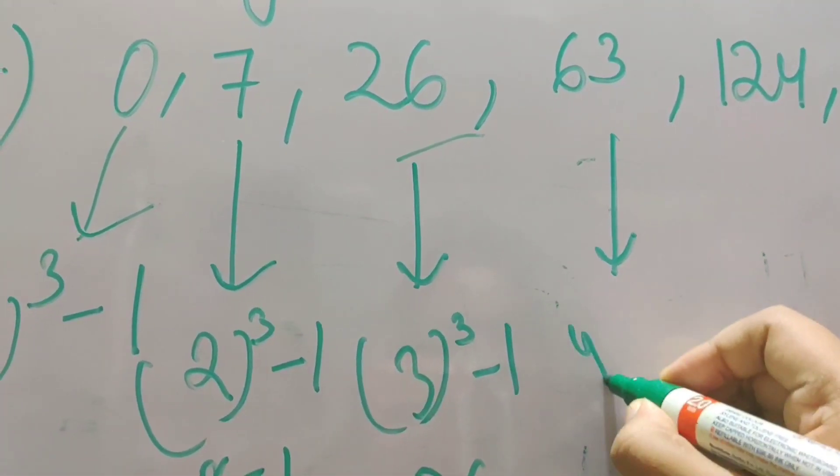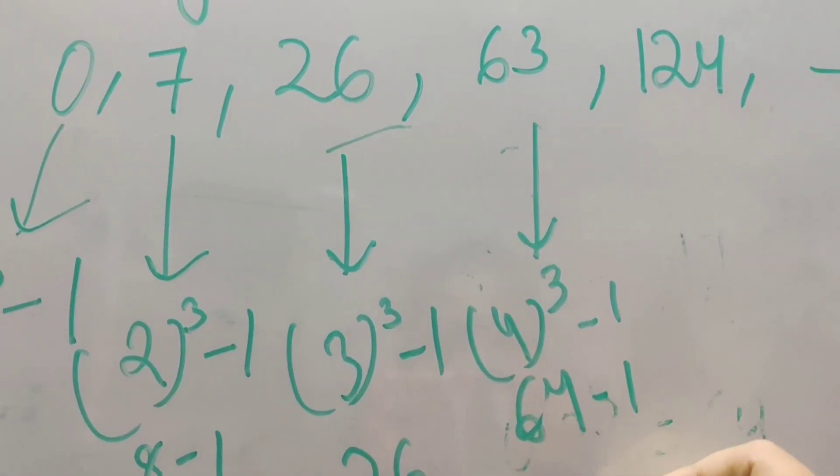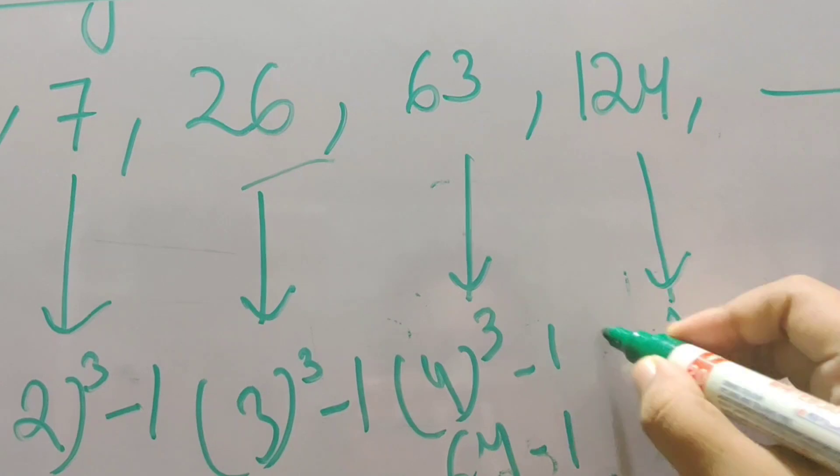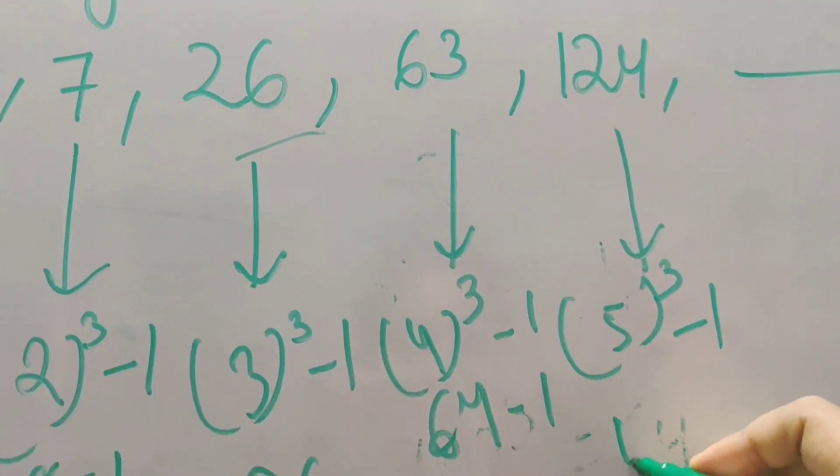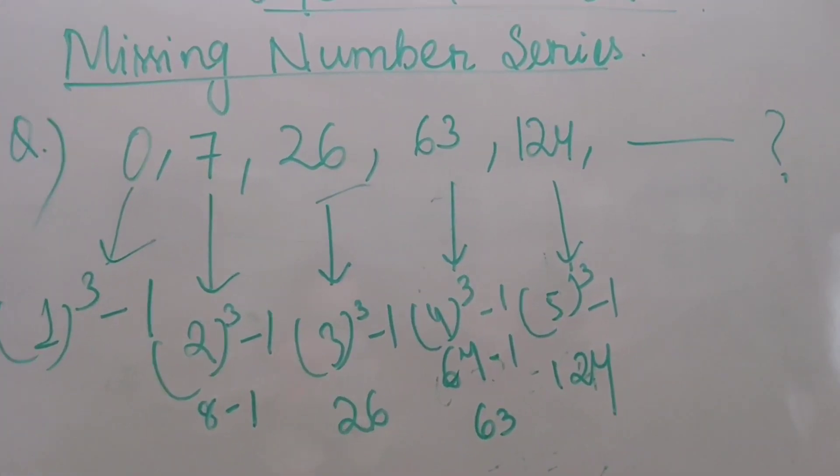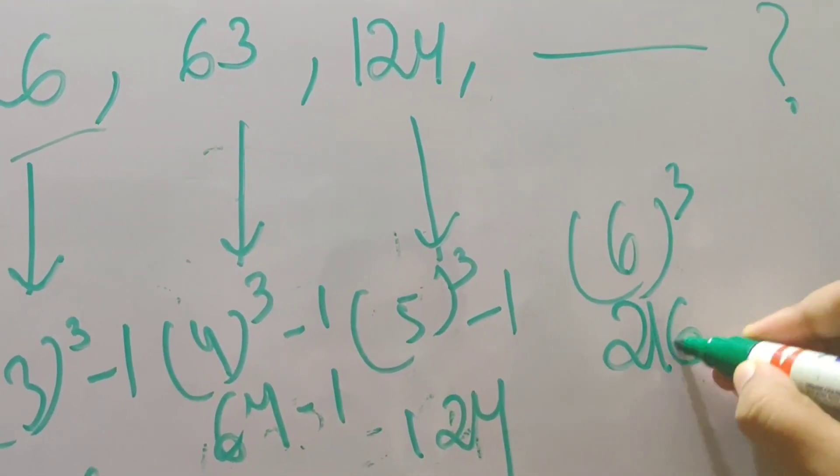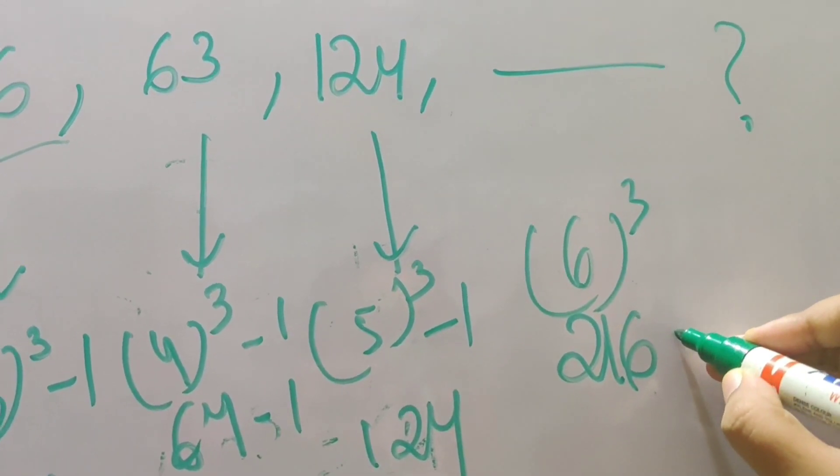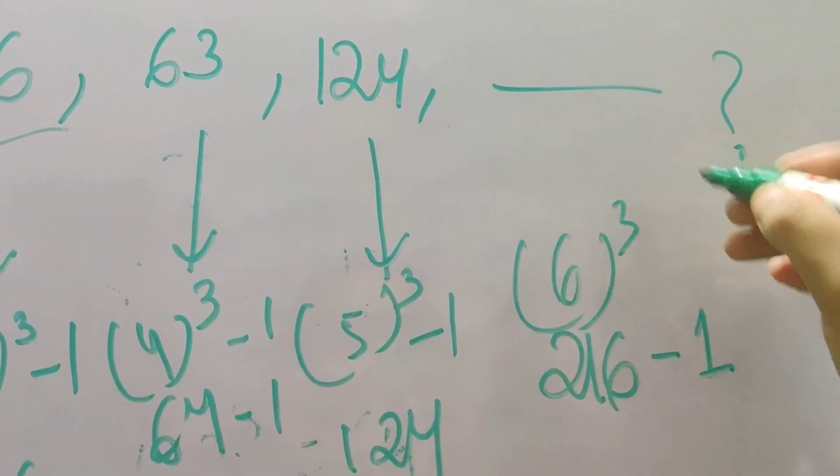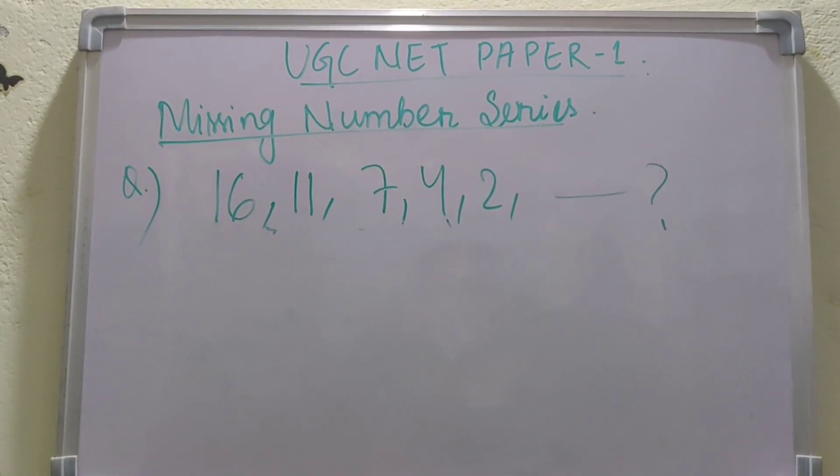The cube of 4 is 64, minus 1 is 63. And the cube of 5 is 125, minus 1 is 124. So here you just observe a pattern. Now the next number is 6. The cube of 6 will be 216. Now subtract it minus 1 will give you 215. So the answer is 215.